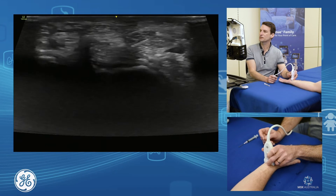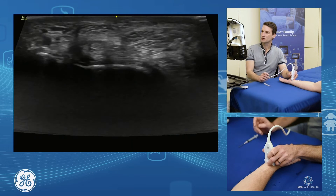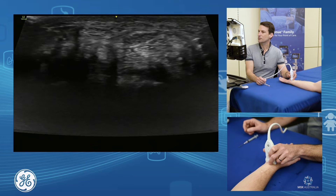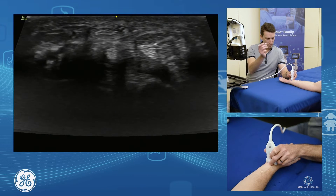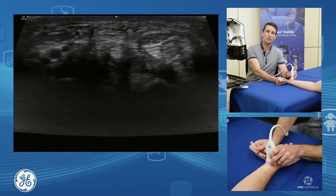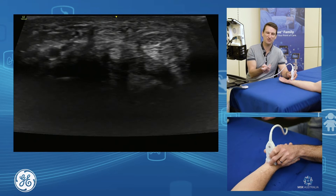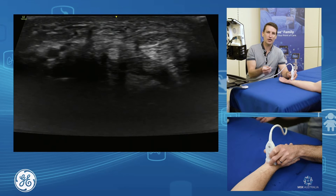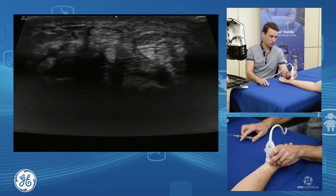Coming back up to our median nerve, a nice simple approach for median nerve injection is from the ulnar aspect of the wrist. We can see our radial artery, median nerve, and ulnar artery - we want to be aware of these arteries. We get the median nerve towards the right-hand side of the screen, moving the transducer radially, then put our needle in, guiding it down and just under the nerve. As we get close, we inject a little to push the nerve away and get spacing, then advance into that space. A little injection just to push the nerve away, open it up, and continue with the needle under the nerve injecting as we go.